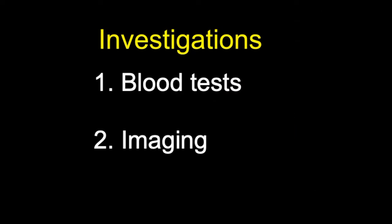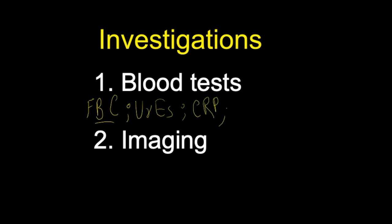Regarding investigations, the two main areas are blood tests and imaging. For blood tests, the first is a full blood count — the white cell count can be a reliable marker of infection and inflammation. Next are U&Es, or urea and electrolytes, which are important to establish baseline renal function in case certain antibiotics are required. Another blood test of interest is CRP, or C-reactive protein, which is raised in the context of infection and inflammation.